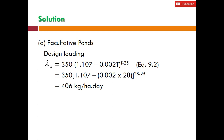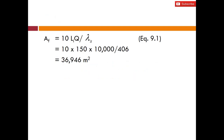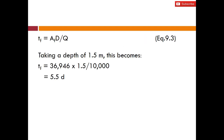First, check the design loading for the facultative ponds. Applying the λs maximum equation at T = 28°C gives λs maximum = 406 kg/hectare/day. Then the area equals 10 × Li × Q / λs = 36,946 m². We then calculate the retention time; assuming a depth of 1.5 m (within the 1.5–2 m range), tf = 5.5 days.